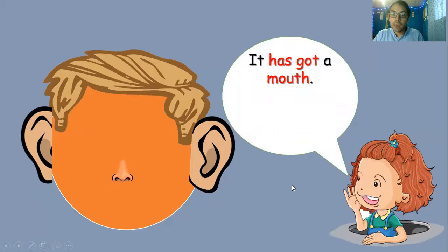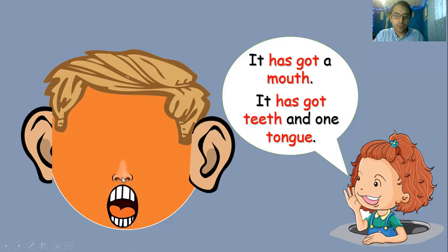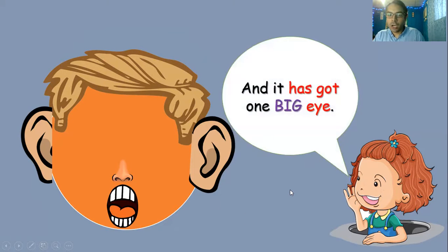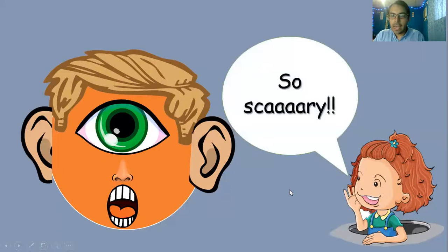Después dice it has got a mouth — tiene una boca, the mouth. It has got teeth — tiene dientes. And one tongue, una lengua. Tiene una boca, the mouth, the teeth, and the tongue, y la lengua. And it has got one big eye — un ojo grande. So scary, que le da miedo, qué tenebroso.